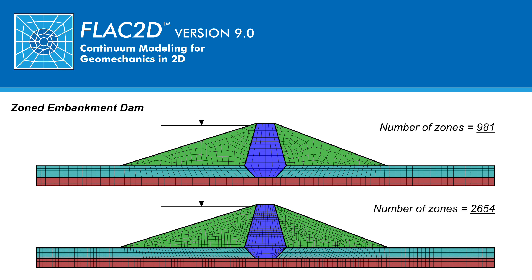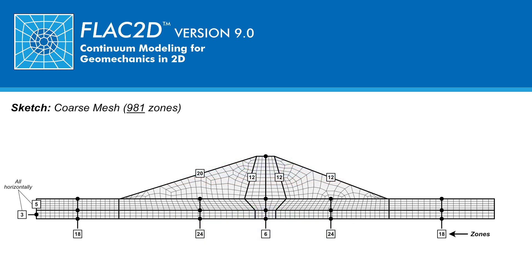When presenting the analysis results, only the results for the coarse mesh will be shown. The two numerical meshes used to model the zoned embankment dam were developed using the sketch tool in FLAC 2D. The number of zones set along each mesh block are shown here for the coarse mesh. A structured mesh was used in all but the shell, for which an unstructured mesh was used.